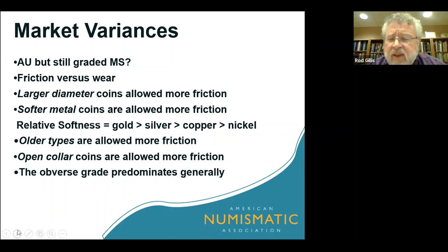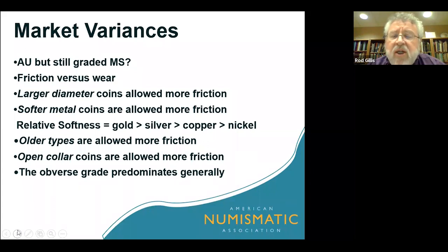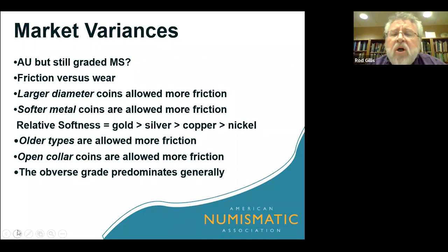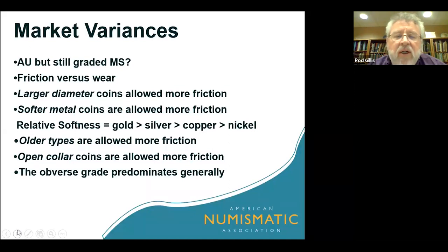Remember when we talk about the sides of a coin, there are three sides: the obverse, the reverse, and the edge. The collar is definitely a die. Generally, we call the obverse grade the one that predominates — usually the obverse is what is called the money side. There are examples where that's not true, but for the vast majority of coins, the obverse is the money side.